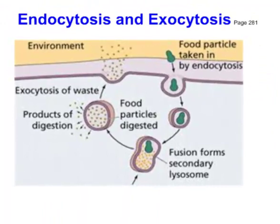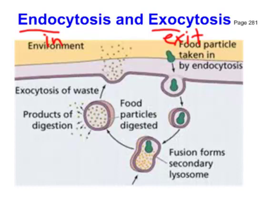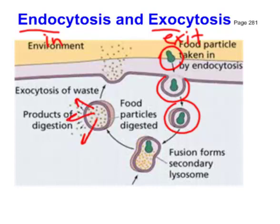Another technique cells use to get things in and out is endocytosis and exocytosis — easy to remember if you think of endo meaning in and exo meaning exit or going out. Plant and animal cells can manipulate their membrane to engulf a food particle, making a little pocket around it, closing it off into a vesicle, and then digesting whatever's inside. The useful contents are distributed to the cytoplasm, and for the waste, the membrane reconnects to the cell membrane, opens up, and allows those waste particles to be expelled — that's exocytosis.